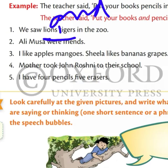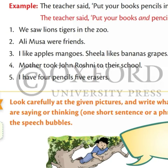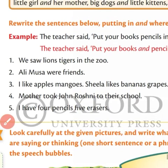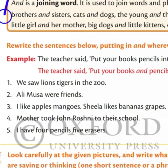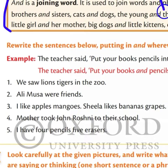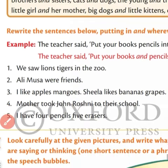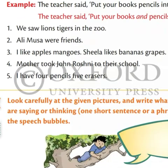You have to learn this definition and try to understand what is a joining word. Learn by heart this definition and try to understand. Now solve question number two: Ali, Musa were friends.